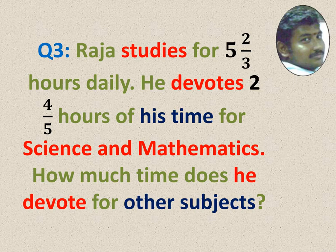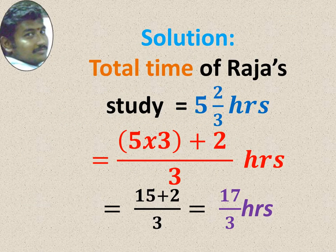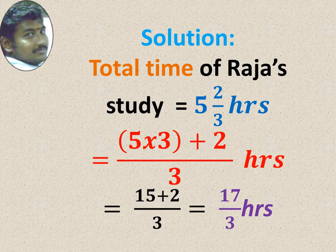Raja studies for 5 2 by 3 hours daily. He devotes 2 4 by 5 hours of his time for science and mathematics. How much time does he devote for other subjects? Like what we did previous sum, we have to make it into improper fraction.